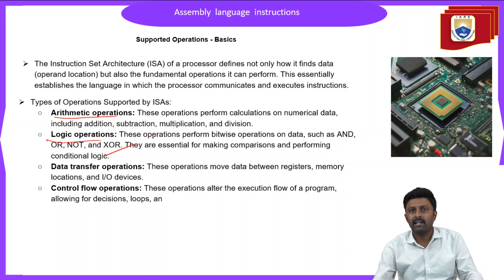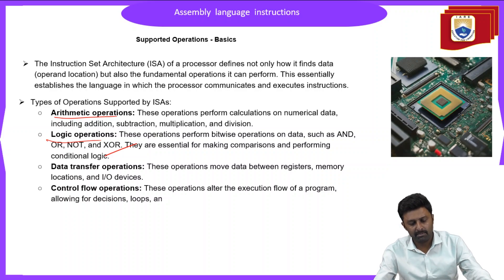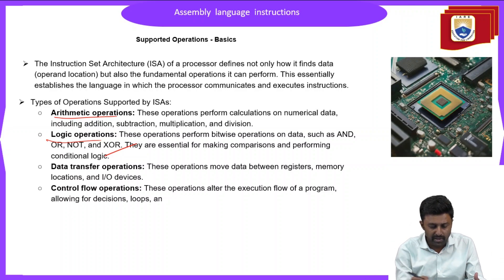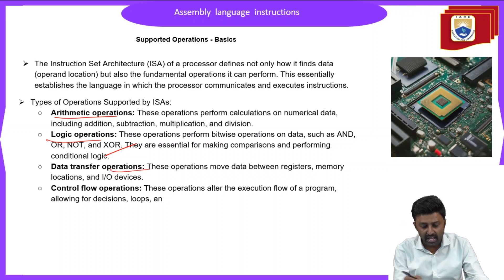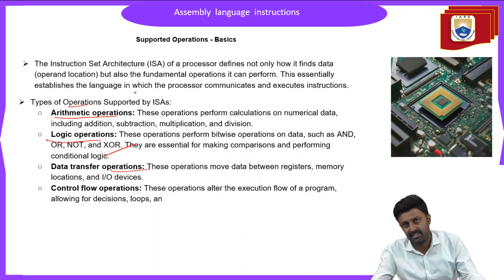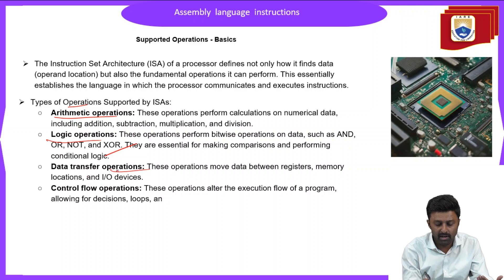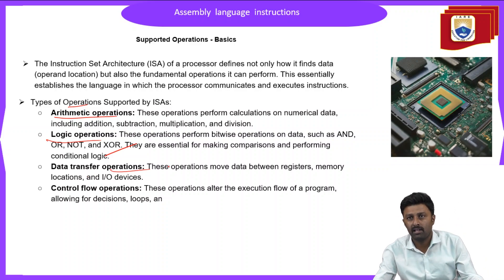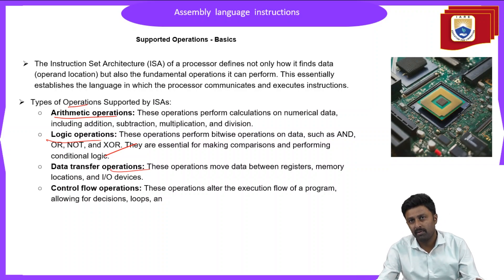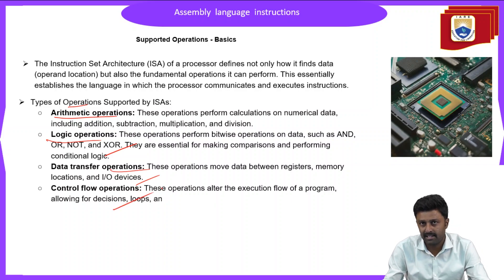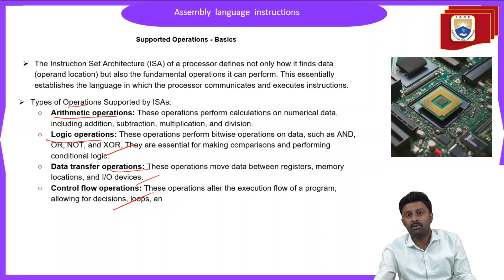Logical instructions are essential for making comparisons and performing conditional logic. For data transfer operations, they move data between registers, memory, and I/O devices — data can be moved from memory to a location, between registers, or to I/O devices. These are the types of operations supported by the ISA. The instruction set architecture also supports control flow operations, which control the flow of program execution.